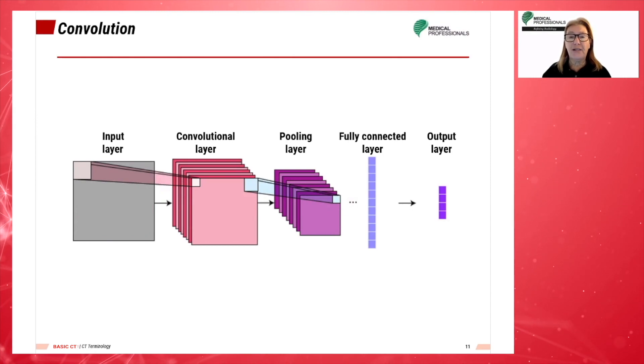Back projection is the actual process of reconstruction to produce the image. Back projection has two distinctive limitations: noise and streak artifacts. It is due to the combination of these restrictions and the advancement of computers that iterative algorithms have slowly replaced this method of imaging reconstruction.